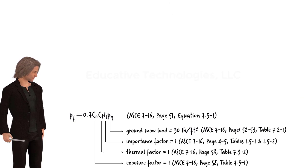By plugging these numbers into this equation, we calculate the roof snow load to be 21 pounds per square foot.